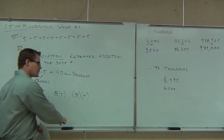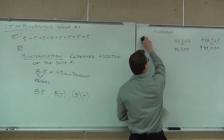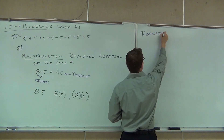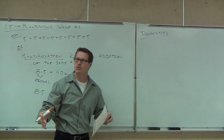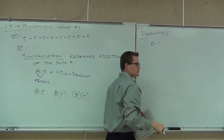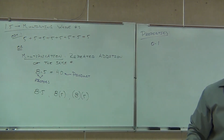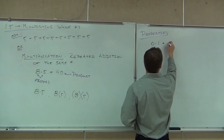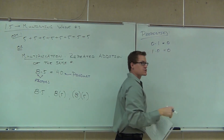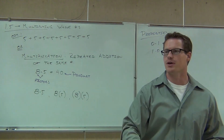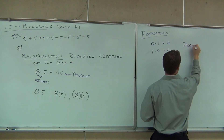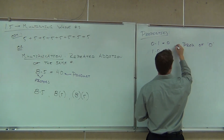Before we get into some actual examples, I'd like to talk about some properties of multiplication. We're going to draw some conclusions and compare these to operations we've already done. First: if I multiply zero times any number — for instance zero times one — I'm going to get zero. What if I do it the other way, one times zero? It's still zero. This is called the property of zero for multiplication: if you multiply zero by anything, you're going to get zero.